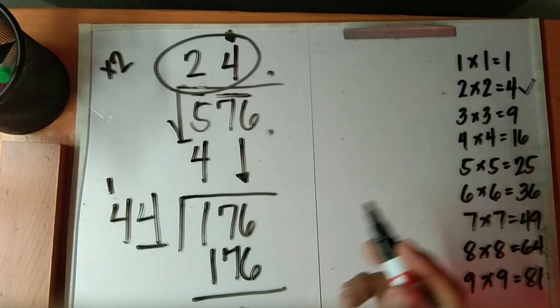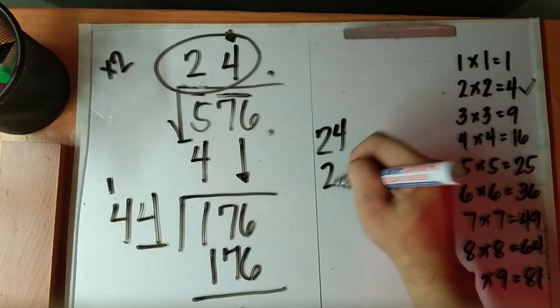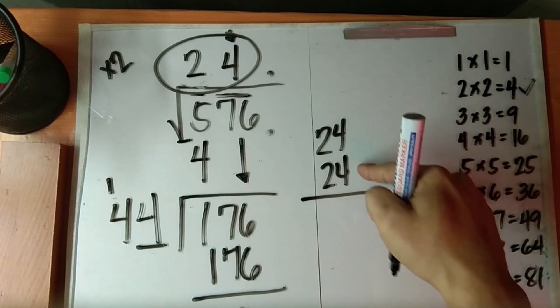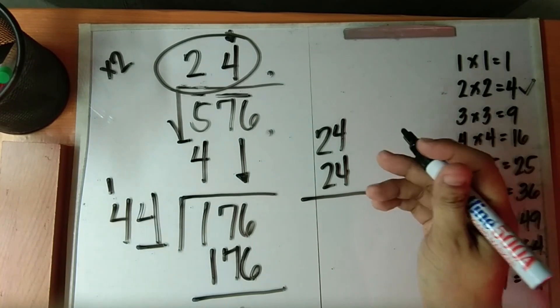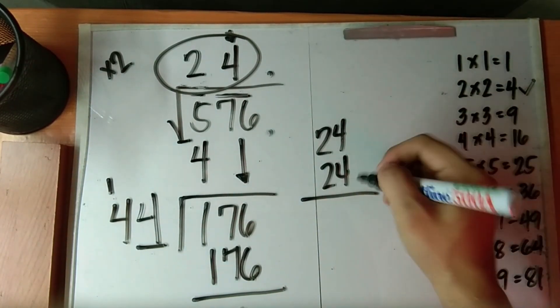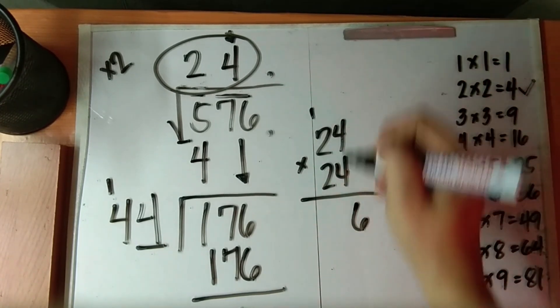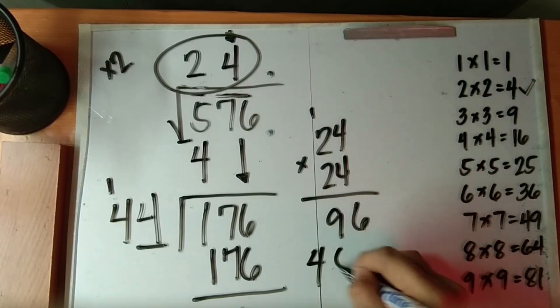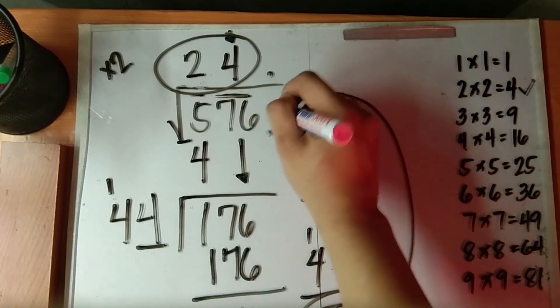So the square root now of 576 is 24. Now to check whether your answer is correct or not, you may multiply 24 by itself. Now if the product obtained here is the same as 576, then we can now say that this value is correct. So finding the product of 24 will have 576.